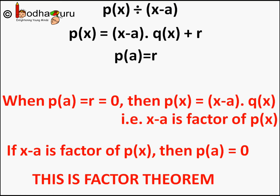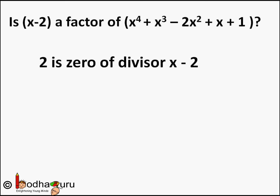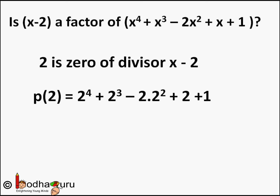Let us take an example. Say we need to find whether (x − 2) is a factor of the polynomial x⁴ + x³ − 2x² + x + 1. First, find the zero of the divisor (x − 2): set x − 2 = 0, so x = 2. So 2 is the zero of the divisor. According to the Remainder Theorem, p(2) equals the remainder, and if it comes out to be 0 then, according to the Factor Theorem, (x − 2) will be a factor of p(x). So let us test it — put 2 in place of x.